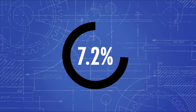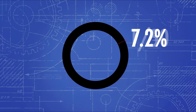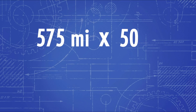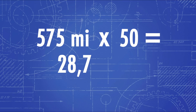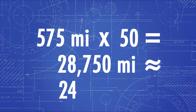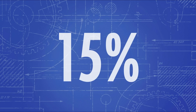7.2 degrees is one-fiftieth of a circle, and 575 miles times 50 equals 28,750 miles — pretty close to the now-known circumference of 24,901 miles. Only 15% off, which is pretty darn good for 240 BC.